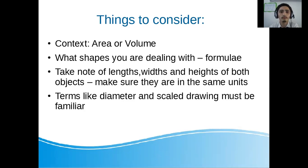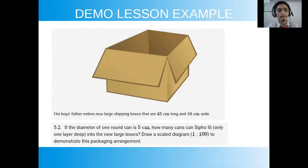So let's look at the question. The context of the question is based on a father that has a business that ships boxes of tuna and he's buying new boxes and he wants to find out how many of these cans can fit into one layer of these new boxes that he wants to use for shipping. So let's read: the boy's father orders new large shipping boxes that are 45 centimeters long and 16 centimeters wide. The diameter of one round can is 5 centimeters and that's something that you should note. How many cans can Sipho fit, only one layer deep, into the new large boxes?